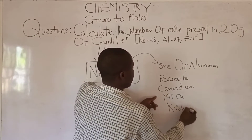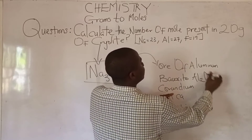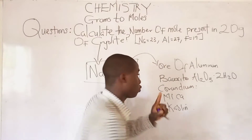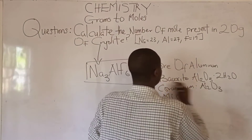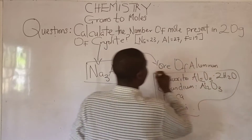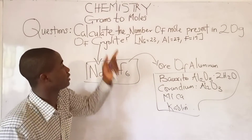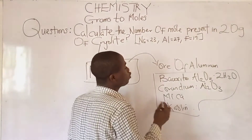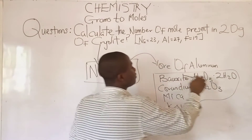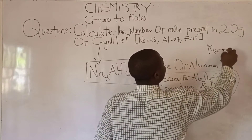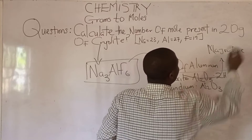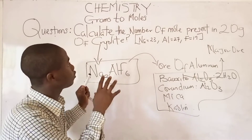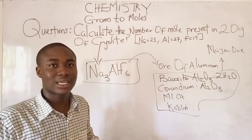Bauxite has the chemical formula Al₂O₃·2H₂O, while corundum is bauxite without water, so it is Al₂O₃. These are the ores for aluminum. But in this question, you will be solving for the number of moles present in 20 grams of cryolite, Na₃AlF₆. Bauxite is the major ore for aluminum. So solve this question and provide the answer in the comment section below.